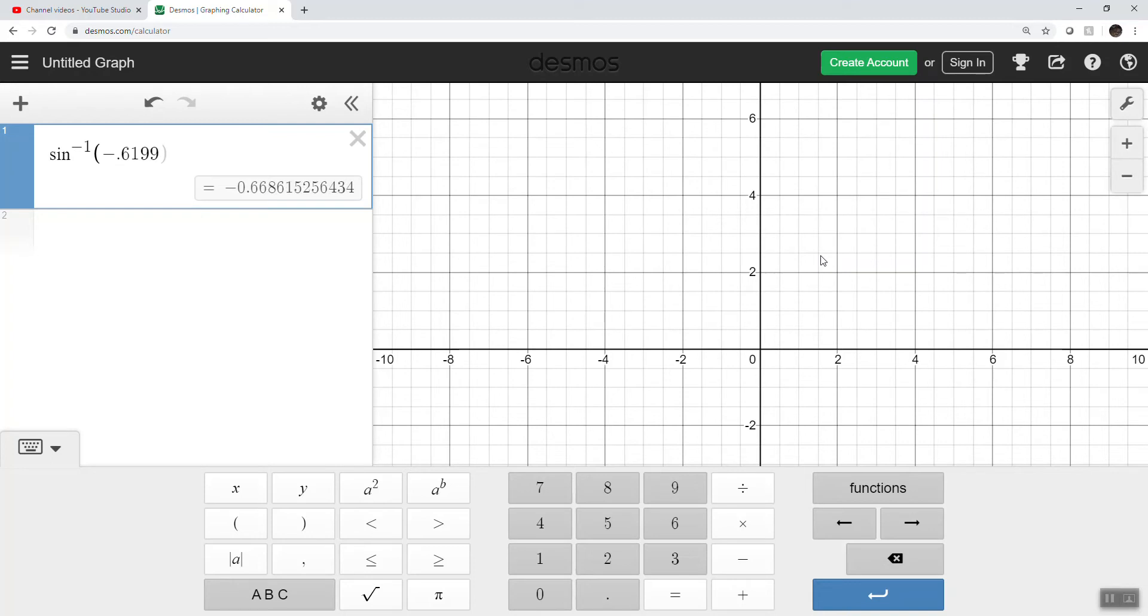So I wanted sine inverse of negative 0.6199. What do you guess? Is that degrees or radians? Good guess. That is radians. So we'll say this is approximately equal to negative 0.669.